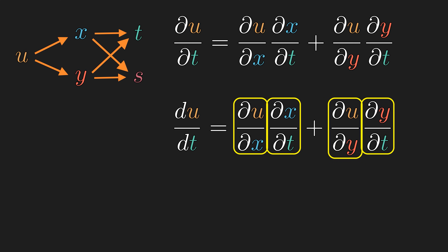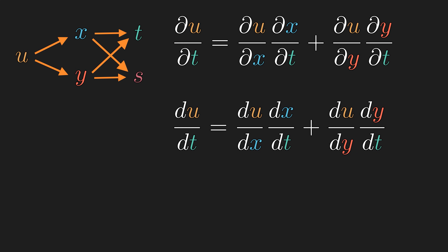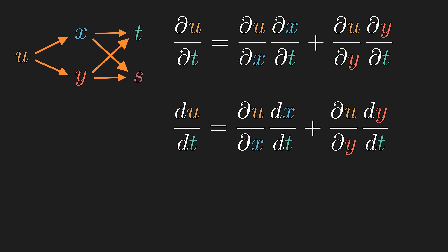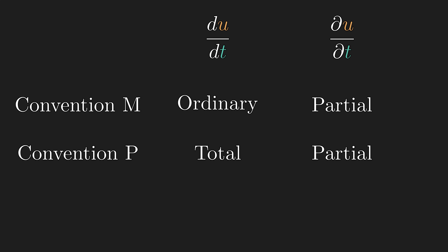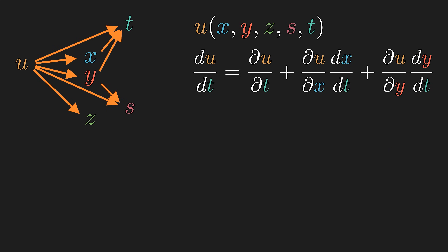For each of these partial derivatives, the explicit derivative and the derivative with chain rule would be the same, so it is technically not wrong to replace all of them with total derivative, although the nuance would change. So far, convention P just seems like the better choice since it is able to handle more situations — in particular, cases where there is explicit dependence as well as implicit dependence. So in what context is convention M ever useful?